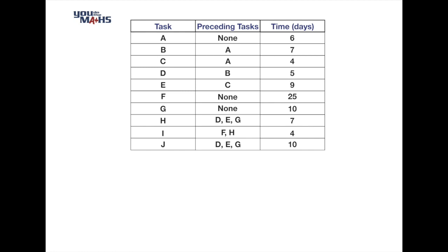To create this project network we'll work from the top of the table - task A - and go downwards. Task A has no preceding tasks, so we begin the network with task A right from the start. We put an arrow from left to right indicating movement along the network. We've also put circles at the beginning and end of task A to indicate how much time has been consumed before and after completing the task.